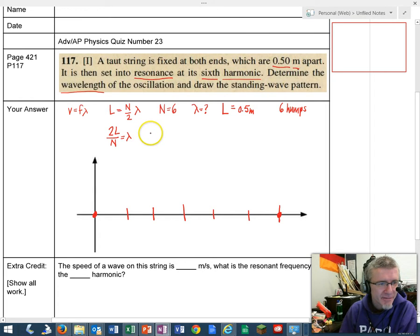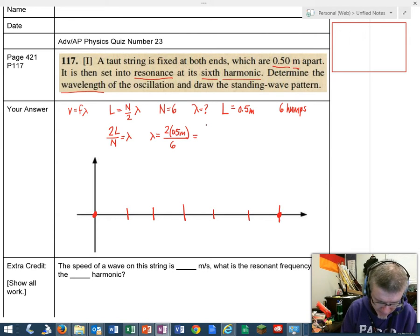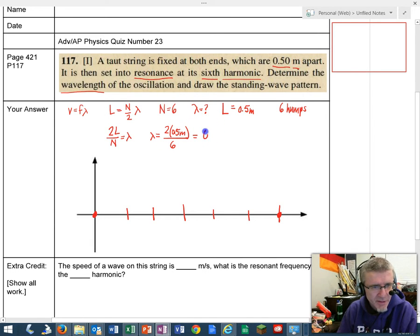If lambda equals 2 times 0.5 meters divided by N equals 6, then we basically have 1.0 divided by 6. So lambda equals one sixth. Getting my calculator out, that's 0.167 meters. So about 16 centimeters. That's the wavelength of the oscillation.